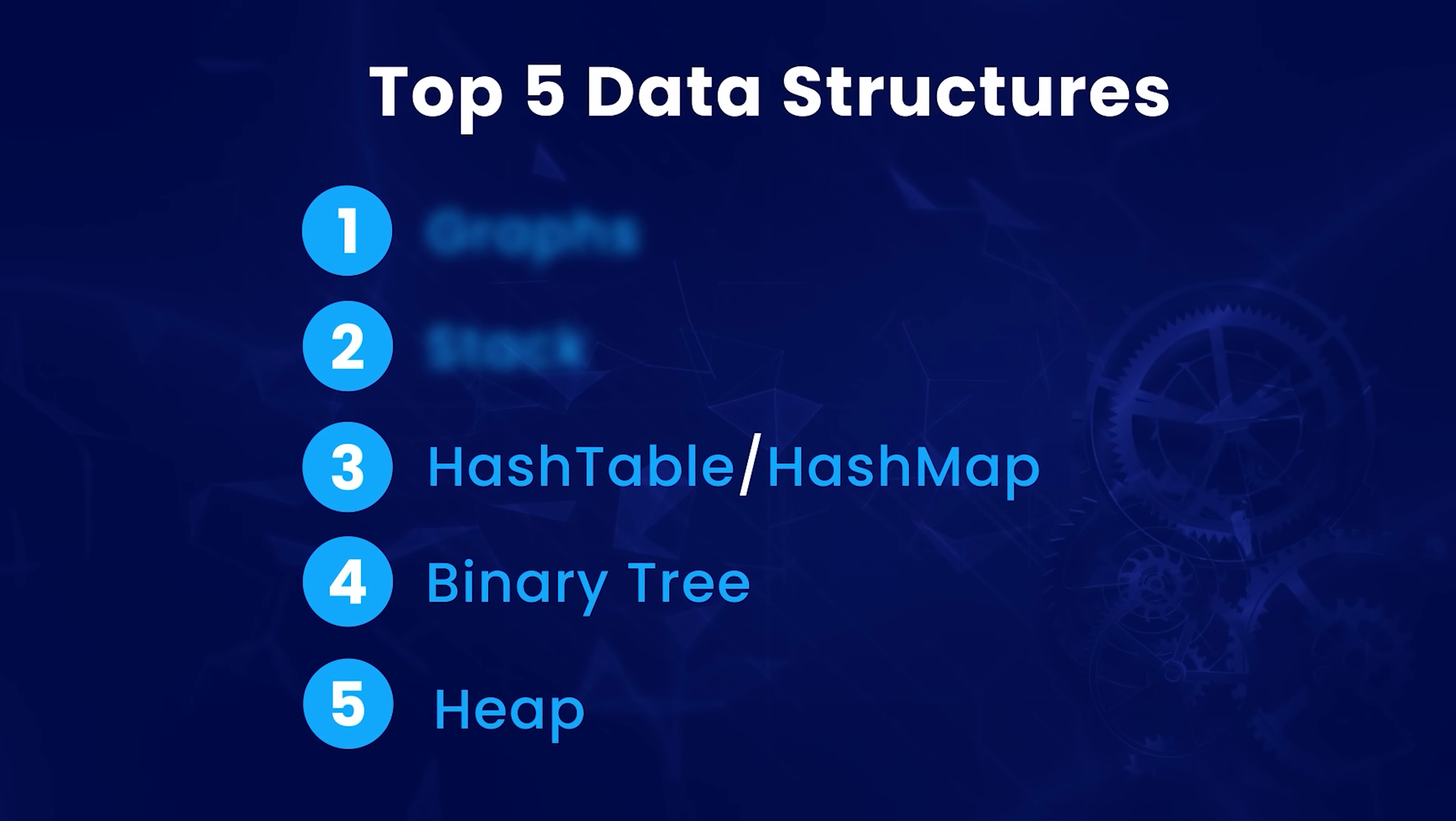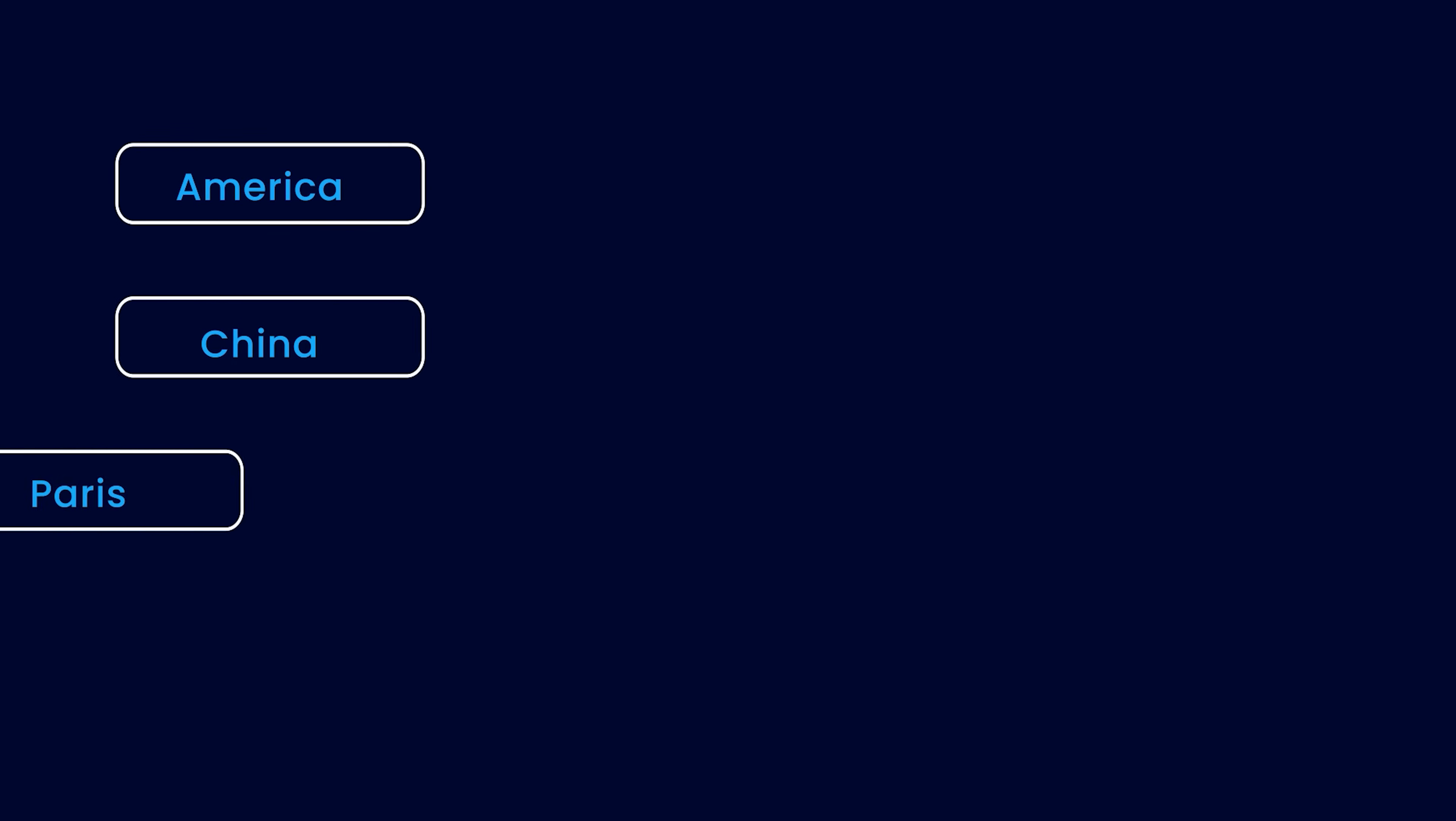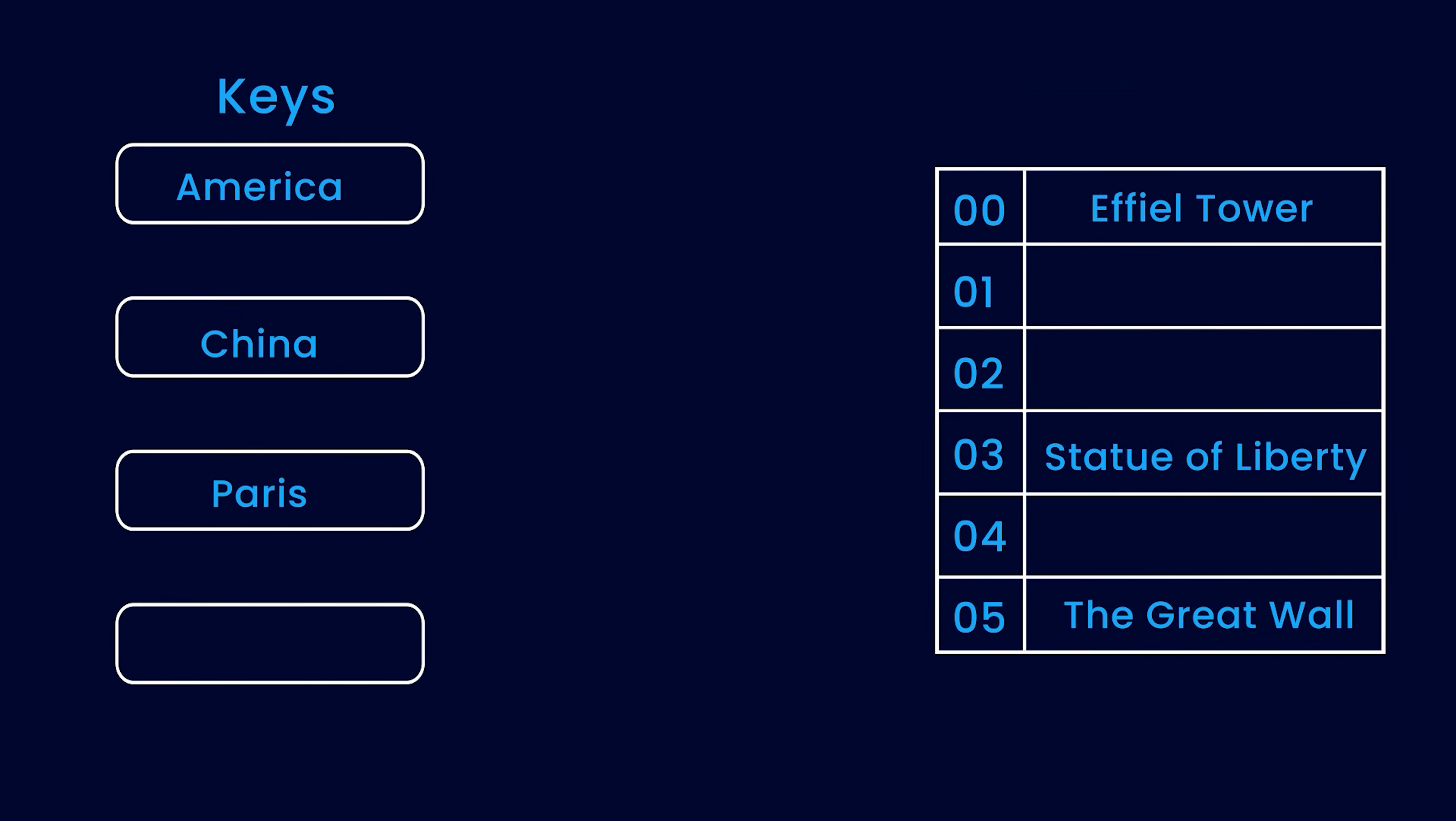At number 3, we have a hash map or hash table. Hash map is a data structure that provides fast access to data based on a key. When you provide a key value pair to a hash map, a hash function is used to map the key to a unique index in an array, and the value is stored at that index.